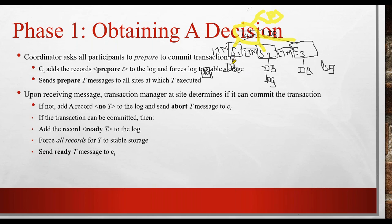Upon receiving the prepare message, each site checks whether it can execute its operation or not. If a site cannot execute, it sends an abort message — meaning: I cannot execute my transaction currently. The site also records the abort message in its log. The log record is used for checking what actions happened before any failure, so even if a failure occurs, you can get your data from the log record.